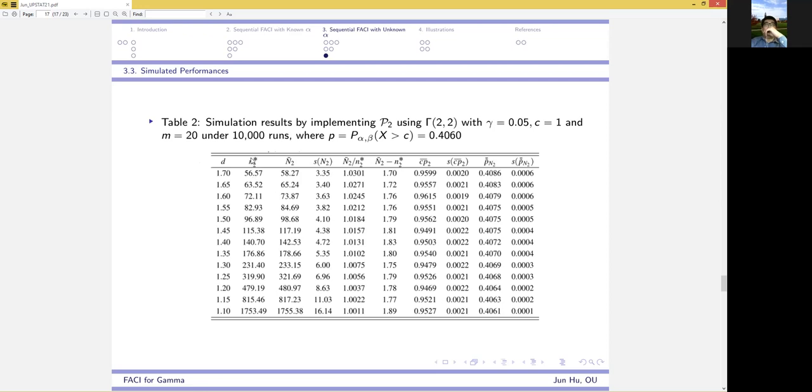And you can compare the magnitude of the optimal fixed sample size and the average of the final sample sizes. They are close to each other and the average coverage probability is close to 0.95.